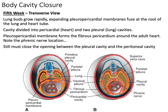By the fifth week, growth is pretty rapid and you can see a form of the embryo that looks more like an adult thoracic cavity. The lung buds are growing and expanding the pleuropericardial membranes. Our cavity is now divided into a pericardial cavity and two pleural lung cavities. The pleuropericardial membrane is actually forming the fibrous pericardium around the heart. You can notice the phrenic nerve right here to the right of the heart — when you dissect, you'll see it attached within the fibrous pericardium and running across the heart.